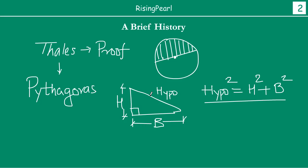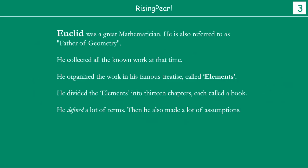Now, while all of these things were happening in the world, Euclid was a great mathematician himself. What he did was he started collecting all of this information which was known at that time. We call him the father of geometry — and we will see why shortly. He organized all the known work in his famous treatise called Elements. At that time, communication across the world was not advanced at all, and there was no formal documentation of anything. So Euclid sat down, collected all the known information, wrote it up in a treatise, named it Elements, and divided it into 13 chapters — each chapter he called a book.